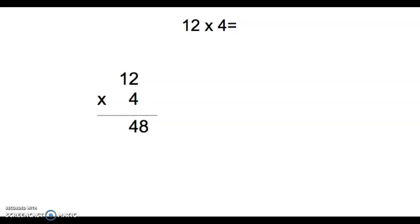So today we're gonna use the same problems as we used on Tuesday. We had 712 times 3, and we're gonna solve it in the same way as we just did the 2 by 1, and now we have 3 by 1 standard multiplication.